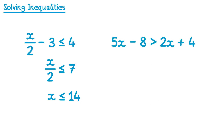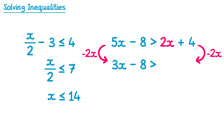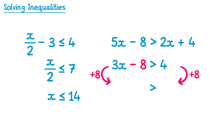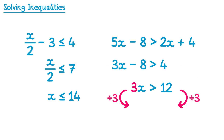Let's solve another inequality — this time one with unknowns on both sides. We'll start with the 2x here and subtract 2x from both sides, making sure we write the greater than sign in the middle. On the left hand side, 5x subtract 2x is 3x, and then we have subtract 8. On the right hand side the 2x's cancel, so we just have 4. Next we deal with the subtract 8 by adding 8 to both sides. On the left hand side the 8s cancel, so we have 3x. On the right hand side, 4 plus 8 is 12. Finally, we divide by 3 on both sides, writing the greater than symbol. 3x divided by 3 is 1x, and 12 divided by 3 is 4. So we get the solution x is greater than 4.